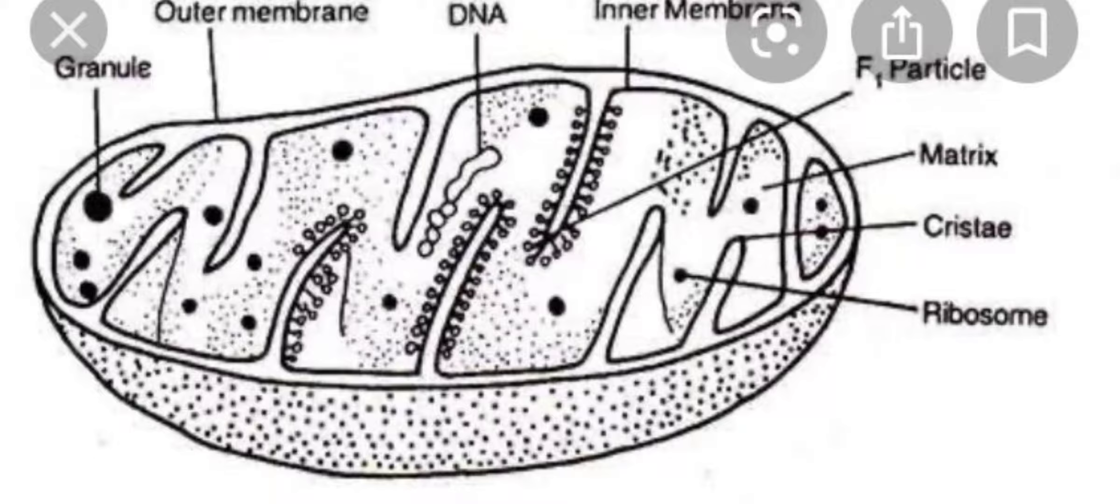The mitochondria has a fluid inside it that is known as matrix. Now the cristae further have the F1 particles or oxysomes which are directly involved in the production of ATP.